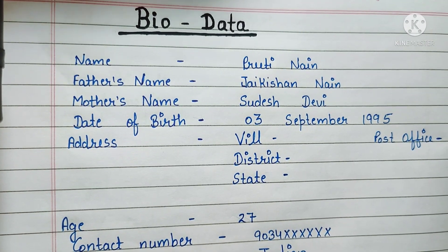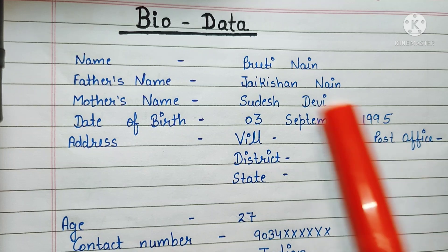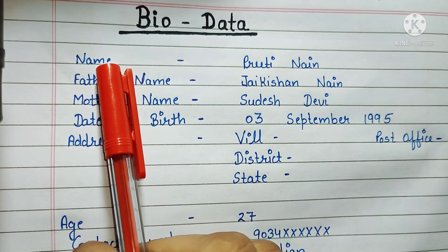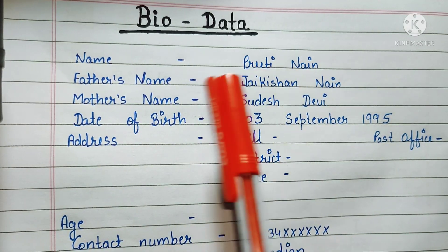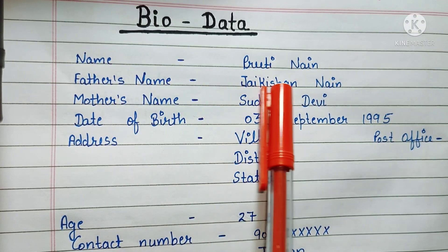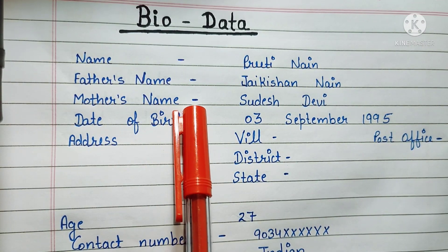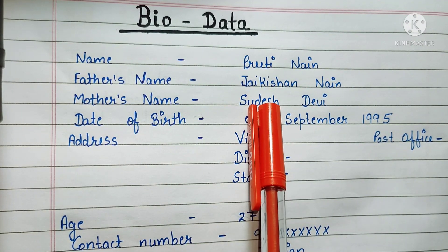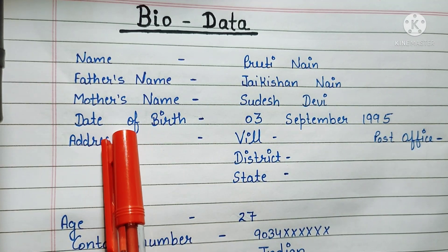For name, write: Name - Prithi Nain. Then you have to write the father's name, like Father's Name - Jaykishan Nain. Then you have to write the mother's name, like Mother's Name - Sudesh Devi.